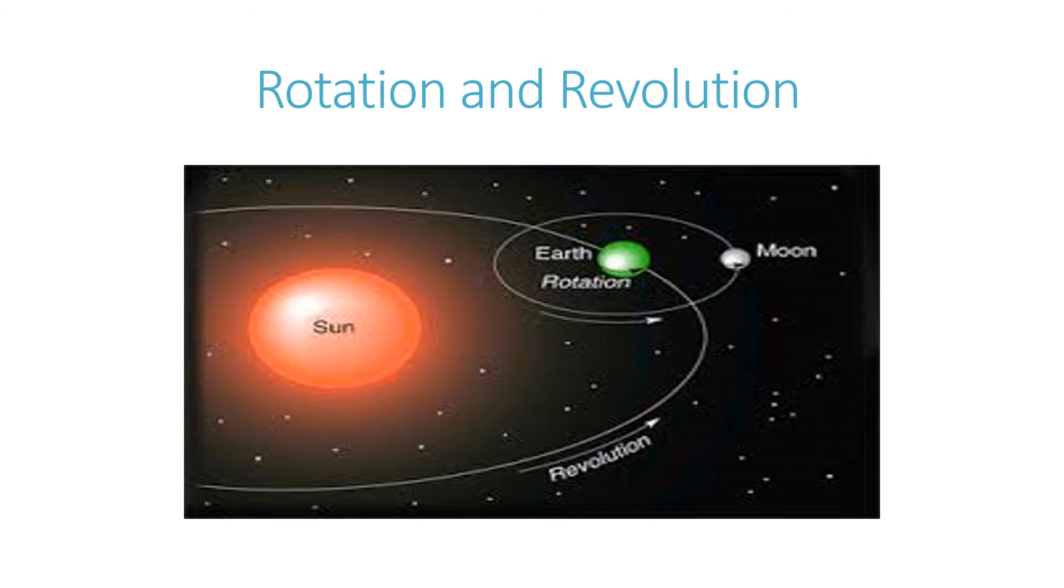Here, you can see the sun is here and the earth is here. It is rotating on its axis like this and it is revolving around the sun also. This revolving around the sun is called revolution. And when the earth is rotating on its axis, as we have seen, it is called rotation. We are going to learn about revolution in the next turn.